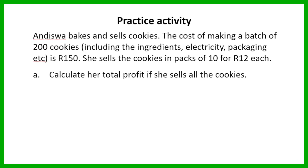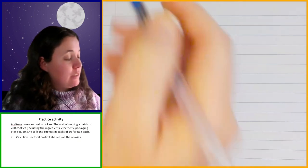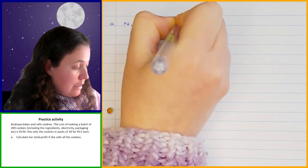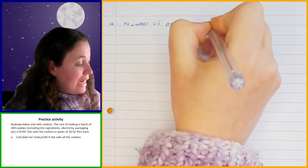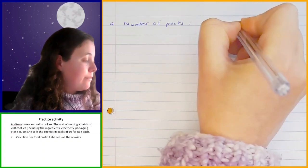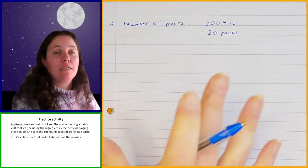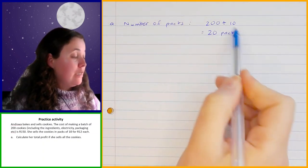So the first thing that you had to do in this example in order to work out the total profit is we need to find out how many packs there are, because we know the price that she's selling each pack for. So the first thing we're going to do is work out the number of packs that she sells. All we're going to do is take the total number of cookies that she's made, which is 200, and divide it by the number of cookies in each pack, which is 10. So that gives us 20 packs.